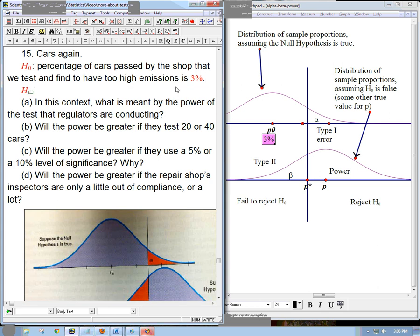And our H_A is going to be that that percentage is greater than 3%. It's still a one-sided test. I'm making it a little bit more precise than we absolutely need to for the problem, but I think it'll help for the explanation. That's why I put a 3% here.